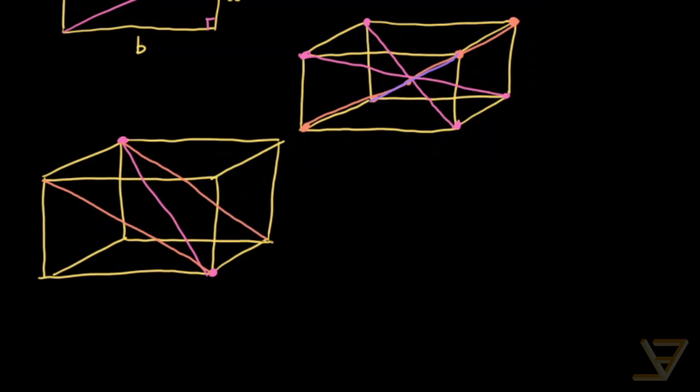And notice that on the orange plane, the pink diagonal lies on the orange plane. So let's draw the orange plane separately.